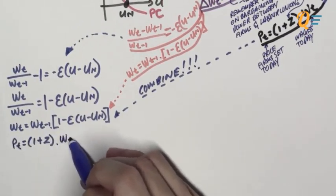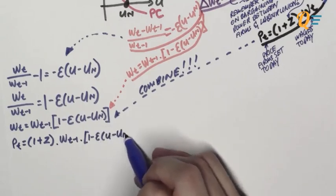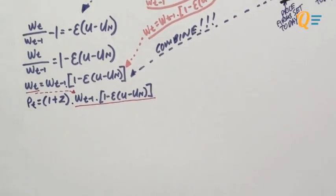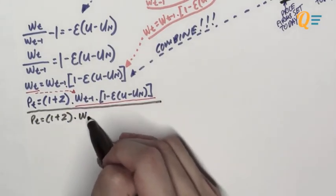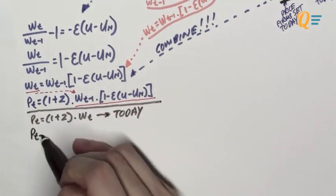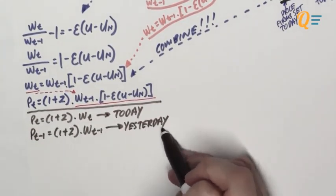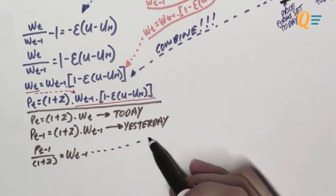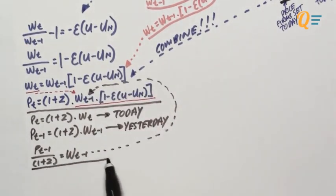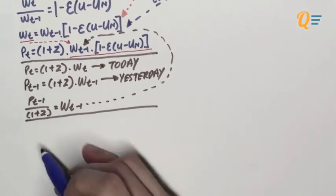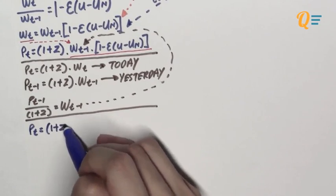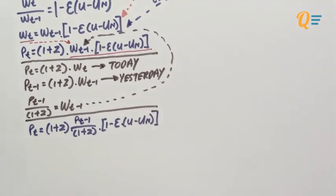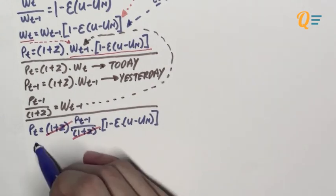I'm going to combine this price-setting function with the Phillips curve equation we just wrote. Since Pt equals 1 plus Z multiplied by Wt, I'm simply going to replace Wt with the entire Phillips curve equation. Now I want to get rid of Wt-1. The price-setting equation today refers to the current period, and the price-setting equation for last period is Pt-1. I rearrange yesterday's price-setting function and substitute it into Wt-1, replacing it with Pt-1 over 1 plus Z.